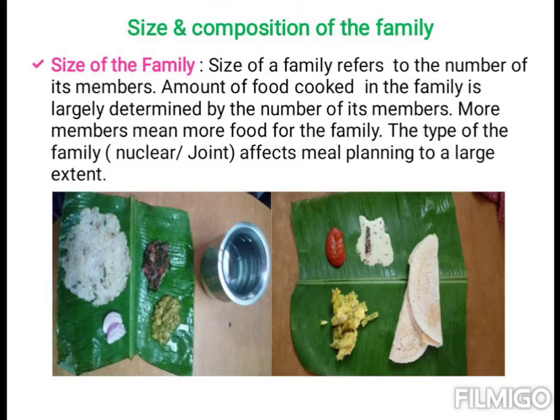The second important factor to be considered is size and composition of the family. Size of the family refers to the number of its members. The amount of food cooked is largely determined by the number of members — more members mean more food. The type of family, like nuclear or joint, affects meal planning to a larger extent.